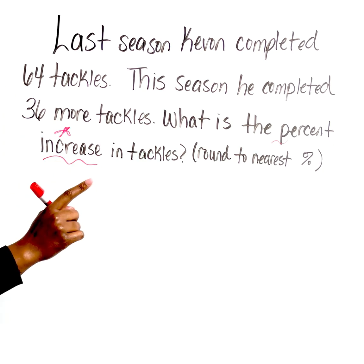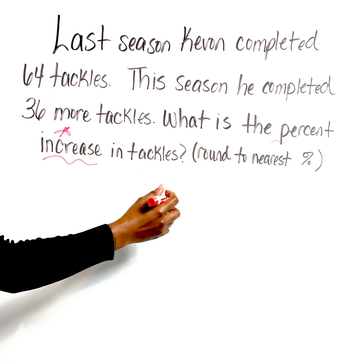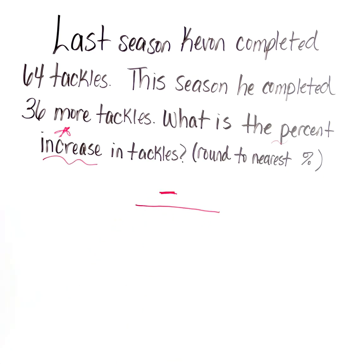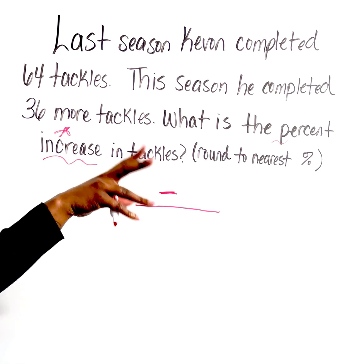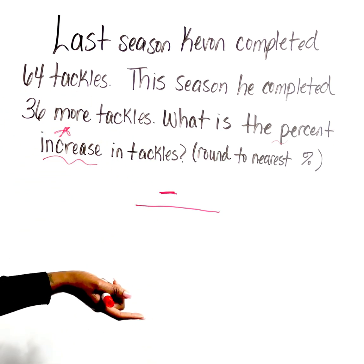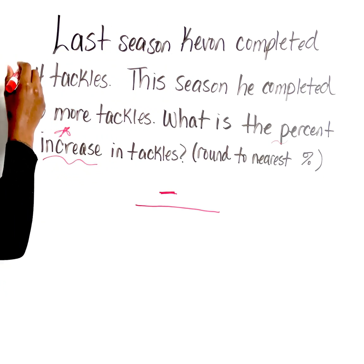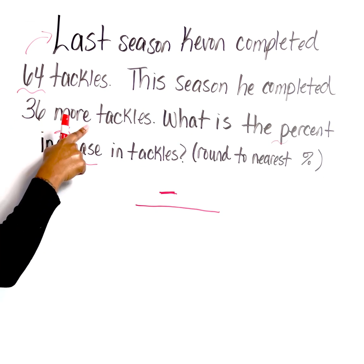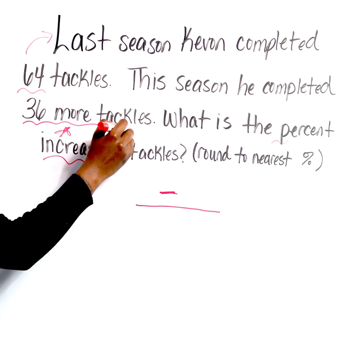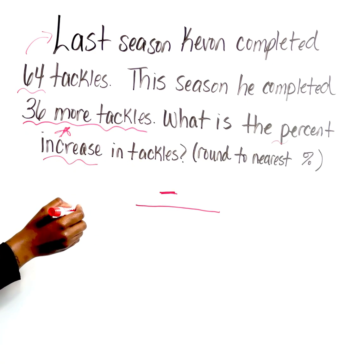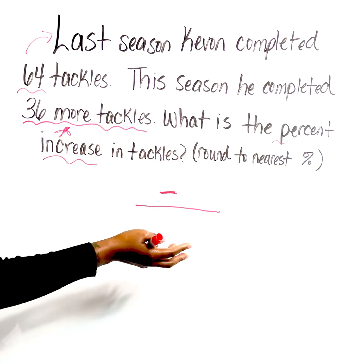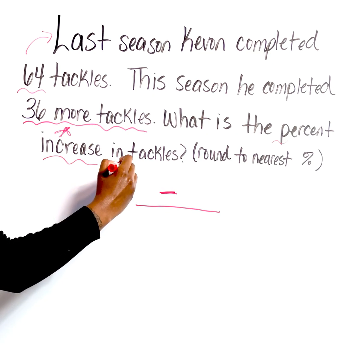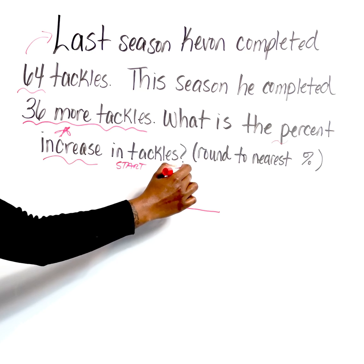That trigger is going to let me know what my process is and how I'm going to set it up. Keep it super simple — go ahead and create your fraction with a subtraction sign up top. We have to make sure we understand what our values represent. It says this season he completed 36 more tackles, so we need to figure out what 'more' represents. When we do percentage increase or decrease, we always need to know what the start is and what the end is.